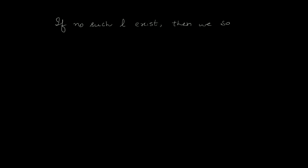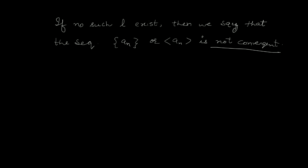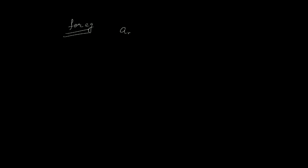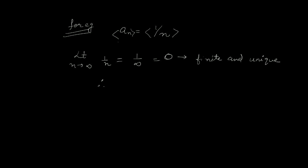If no such L exists, then we say that the sequence An is not convergent, and sometimes we call it divergent. For example, let's suppose the sequence An = 1/N. We have to check whether it is convergent or not. We find the limit of 1/N as N approaches infinity, which is 1/∞ = 0, which is finite and unique. Therefore, our sequence An is convergent and 0 is the limit of this sequence — it converges to 0.